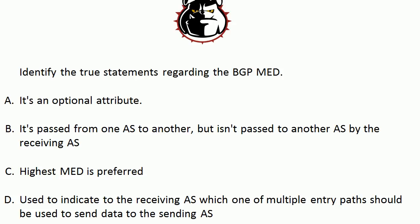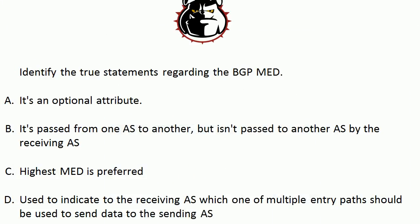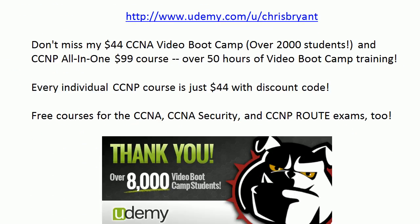It's the Multi-Exit Discriminator. It's easy to look at these as entry paths as well, but the full name is Multi-Exit Discriminator. If you just remember that first part, it'll tell you that when you've got multiple exits, you can indicate to a router in another AS which path it ought to use to send data in. Again, it's an optional attribute, but it can be a very helpful one. Thanks for taking today's CCNP Route and T-Shoot Quick Quiz. I'm Chris Bryant, and thanks for making us part of your CCNP success story.